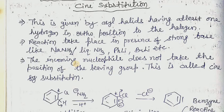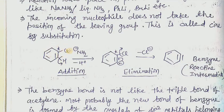The Benzyne mechanism is given by aryl halides having at least one hydrogen in the ortho position to the halogen. The reaction takes place in the presence of a strong base like sodium amide, liquid ammonia, phenyl lithium, or butyl lithium. The incoming nucleophile does not take the position of the leaving group — this is called cine-substitution.